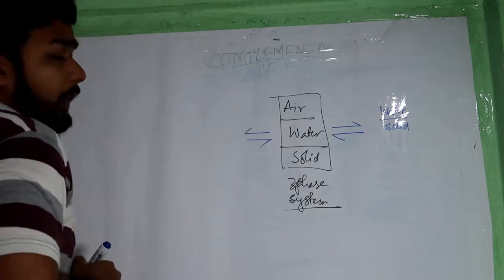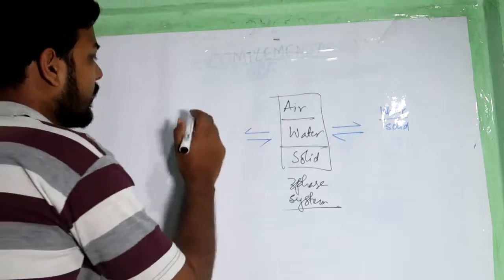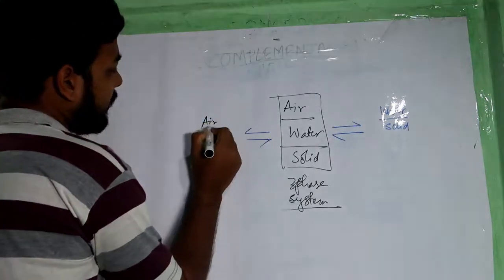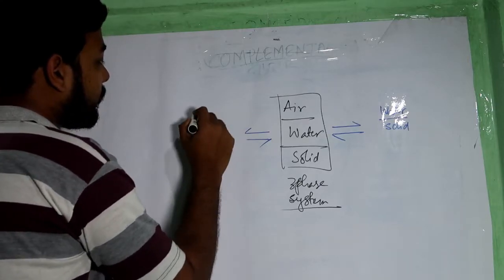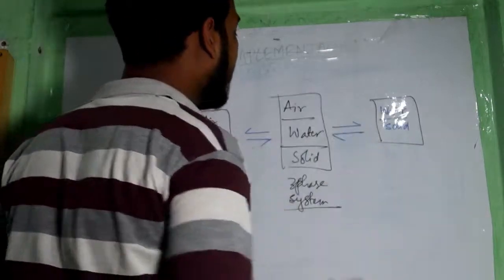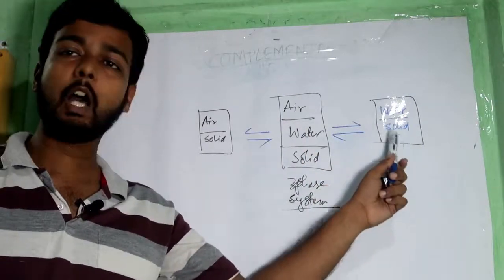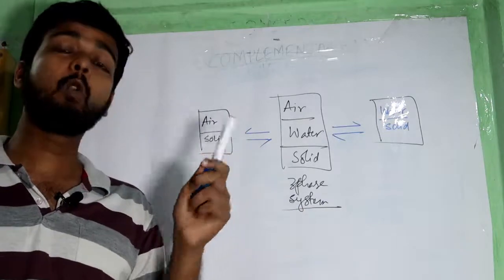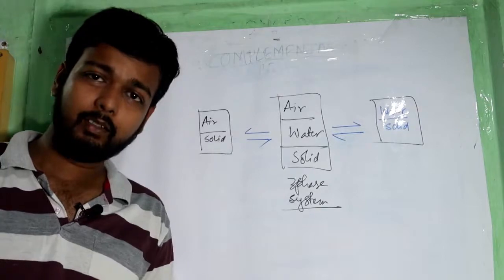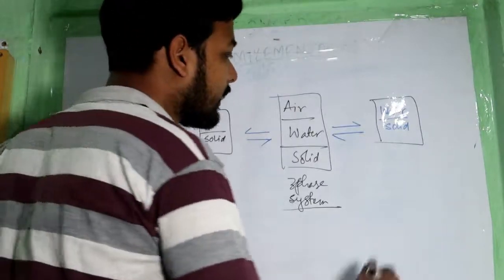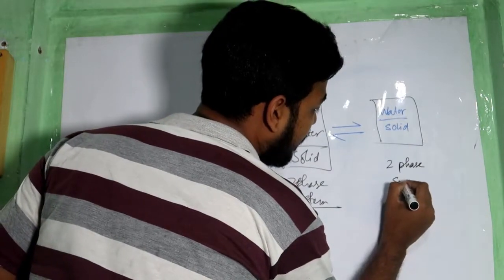Suppose the volume of water is replaced by volume of air — then what will happen? Simple: air and solid. So there are two materials, and that is called the two-phase system.